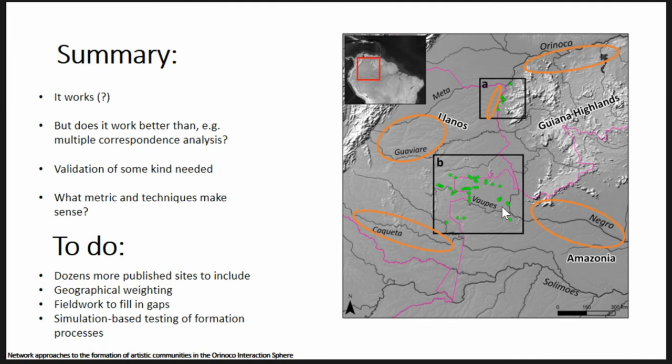So it works, kind of — the code runs. I'm not sure it's showing me anything I didn't already know from getting deep into the data while collecting it. The question is whether it works better than something like multiple correspondence analysis. I've been talking to Tom about doing something like this for maybe five years, and he told me not to do it — that other methods work better. I'm kind of coming around to his view. Some sort of validation measures are needed — bootstrapping, simulation techniques to generate random networks and see how the empirical network differs — though I don't know exactly what that should look like.